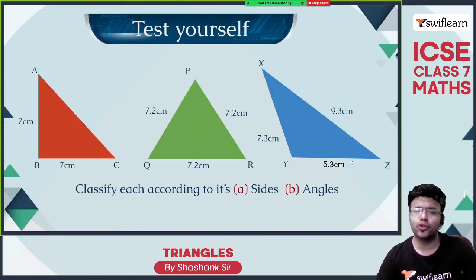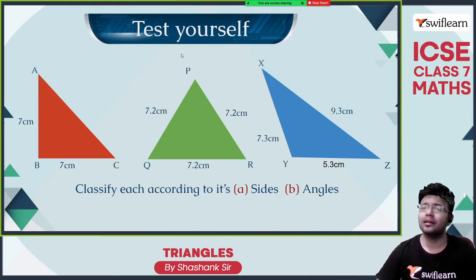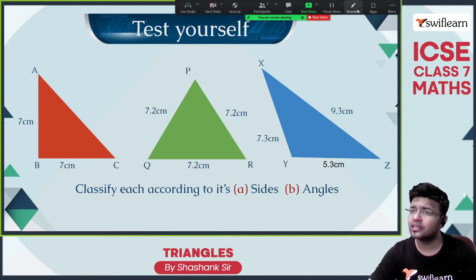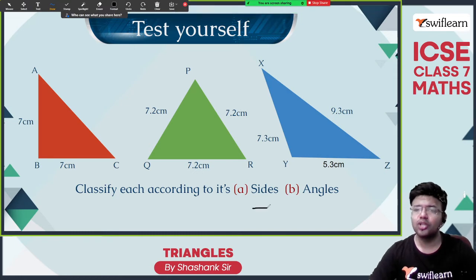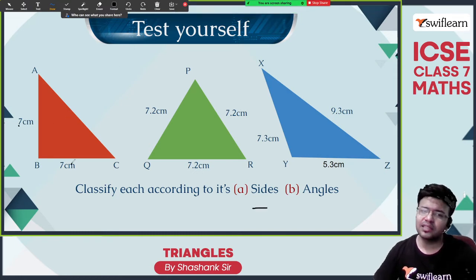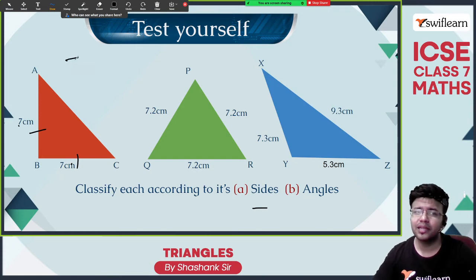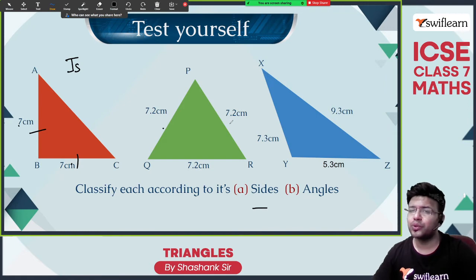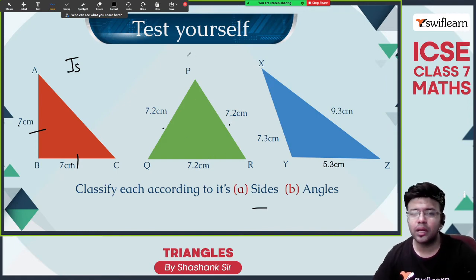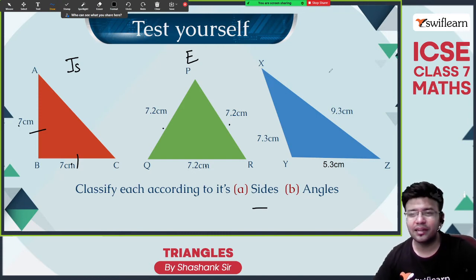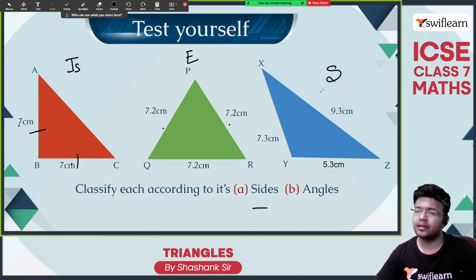Now, test yourself — classify these triangles according to sides and according to angle. Classifying according to sides first: 7 and 7, these two sides are the same, so this is an isosceles triangle. 7.2, 7.2, 7.2 — all the sides are equal, so this is an equilateral triangle. Here all the sides are different, so it is a scalene triangle.